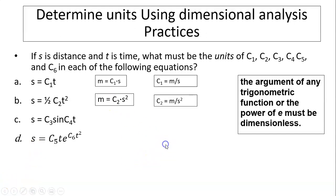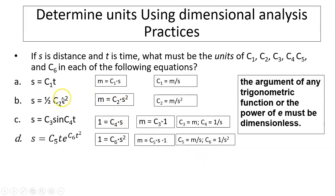Here are the answers. As you can see, this is the same as algebra. To solve for C1, you use S divided by T. Since S is distance, it's meters, and T is time, so it's seconds. C1 is meters per second. Similarly, one-half has no unit. C2 is S over T squared, so it's meters over seconds squared. The arguments of any trigonometric function like sine, cosine, tangent, or the power of E must be dimensionless. So C4 times T has to equal 1 with no dimension. T is seconds, so C4 has to be 1 over seconds. C3 times 1 equals meters, so C3 has to be meters.